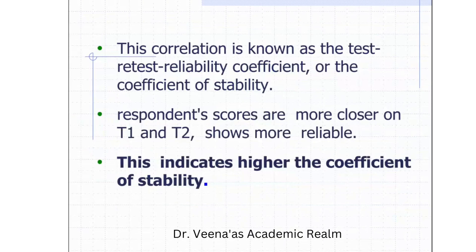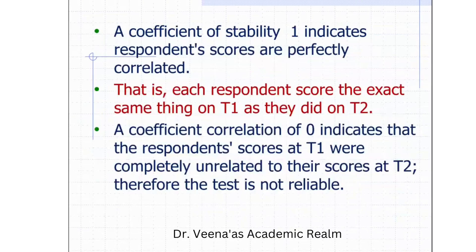This correlation is known as the test reliability coefficient or the coefficient of stability. If respondent scores are closer on T1 and T2, it shows the tool is more reliable. If the scores are closer, like 0.9 or 0.8, it shows reliability. If scores are far apart — like 0 and 0.9 — that is not closer, which indicates the tool is unreliable. Closer scores indicate higher coefficient stability. A coefficient of stability of 1 indicates respondent scores are perfectly correlated — each respondent scored exactly the same on T1 as on T2 — meaning it is highly reliable and highly stable.